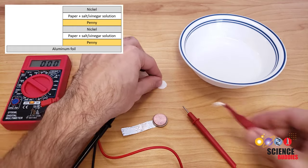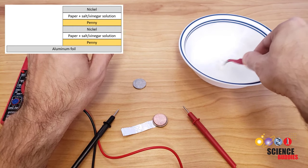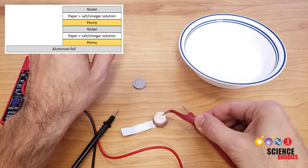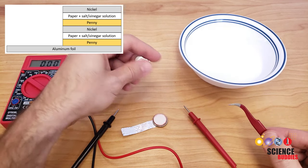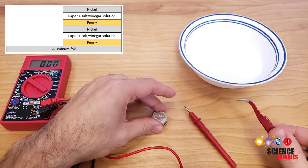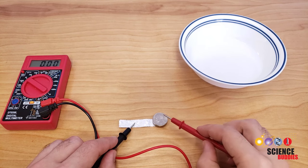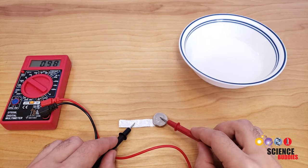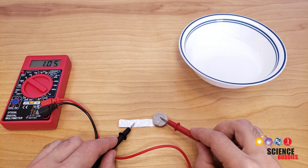Then take your next paper layer, again, soak it in the salt and vinegar solution, put that on top of the penny, and put another nickel on top of that paper layer. Again, take your multimeter leads, apply gentle but firm pressure, and you should see that the voltage is higher than what you had with a single cell.